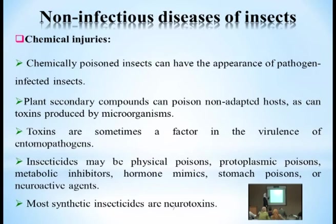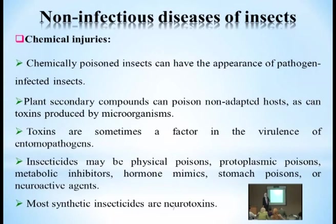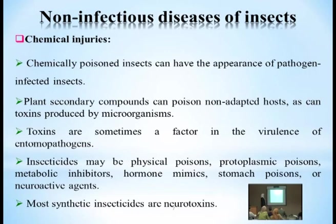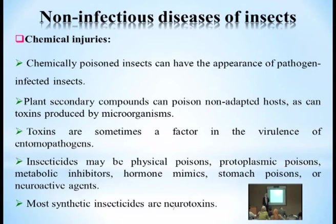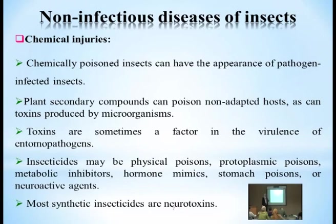Chemical toxicity can lead to the appearance of some diseases because it weakens the insect's immune system, allowing decaying pathogens to emerge. Plant secondary compounds can also be poisonous to non-adapted hosts and toxins can be produced by microorganisms. These secondary metabolites — including amino acid metabolites, enzymes, and various compounds — can act as repellents or toxins against insects.